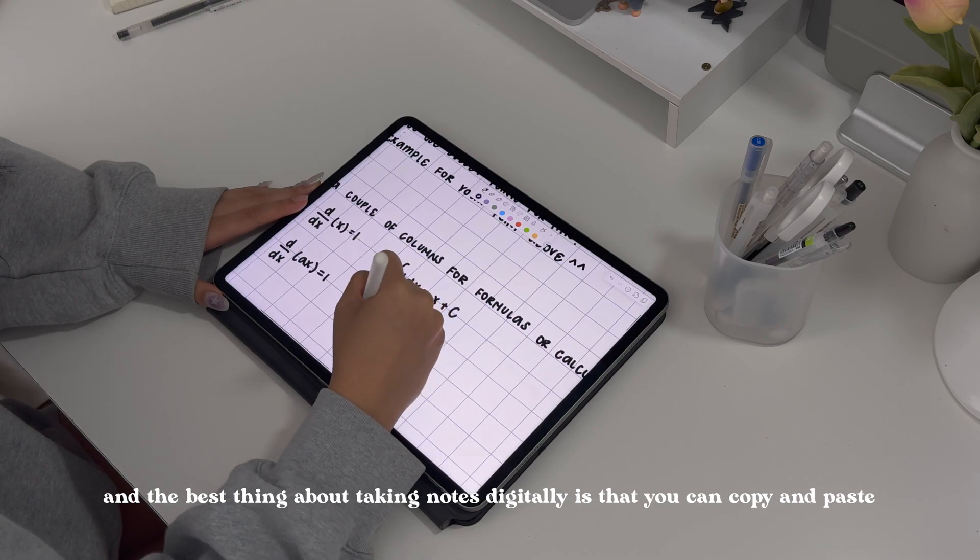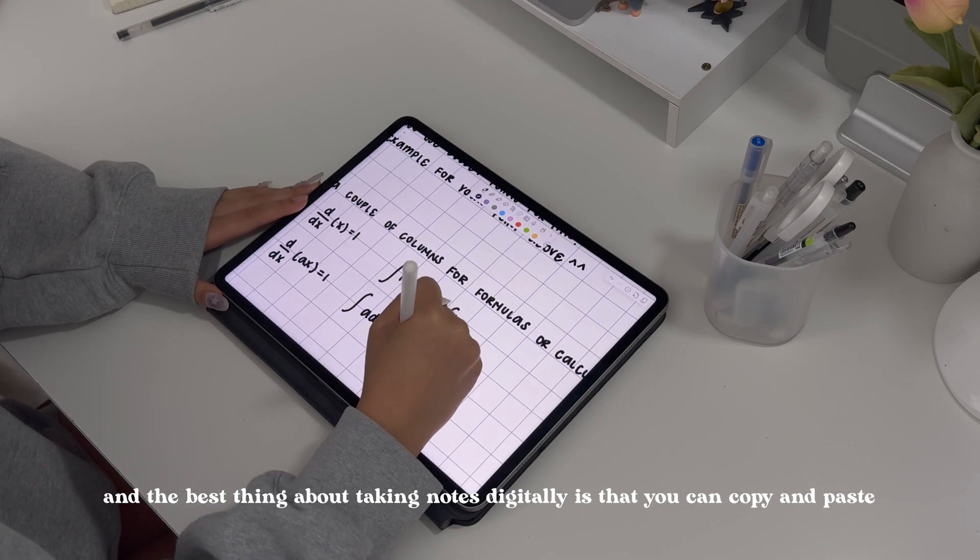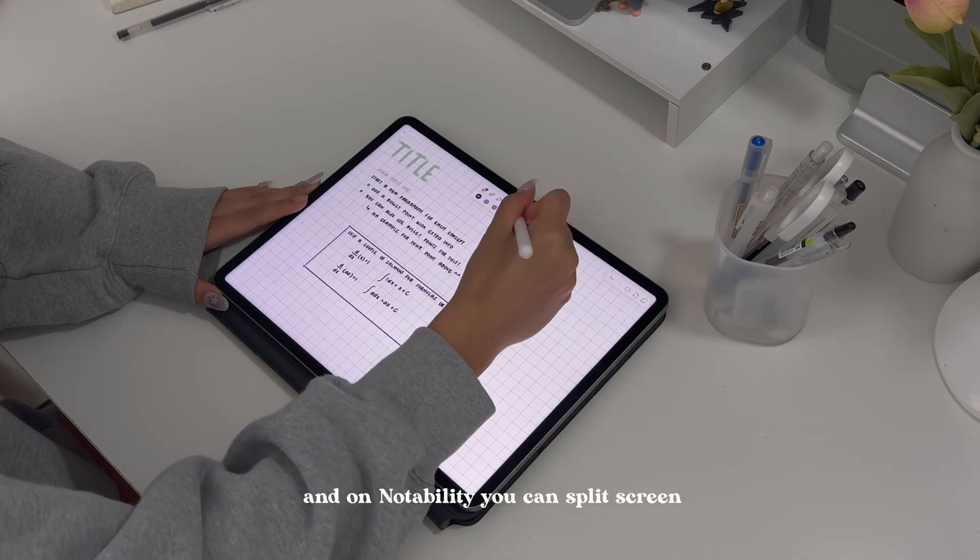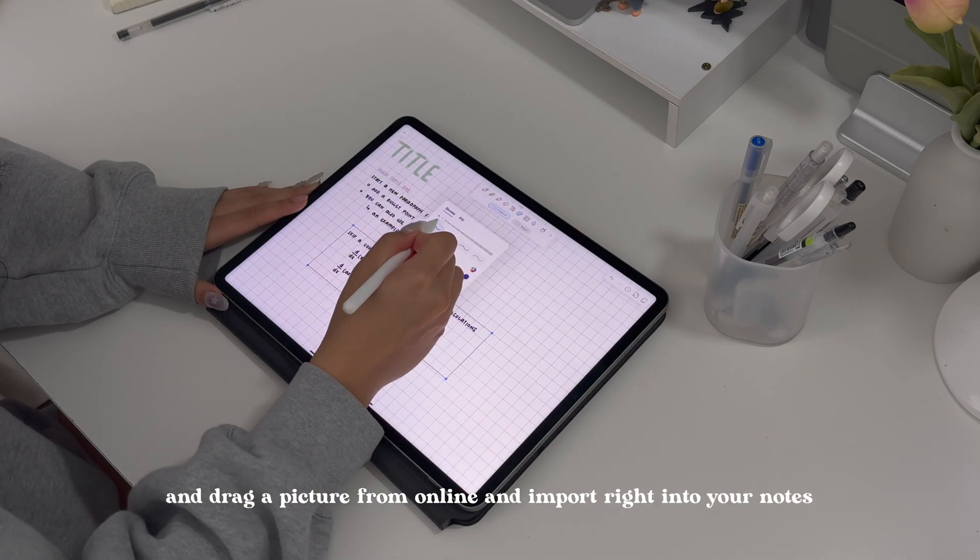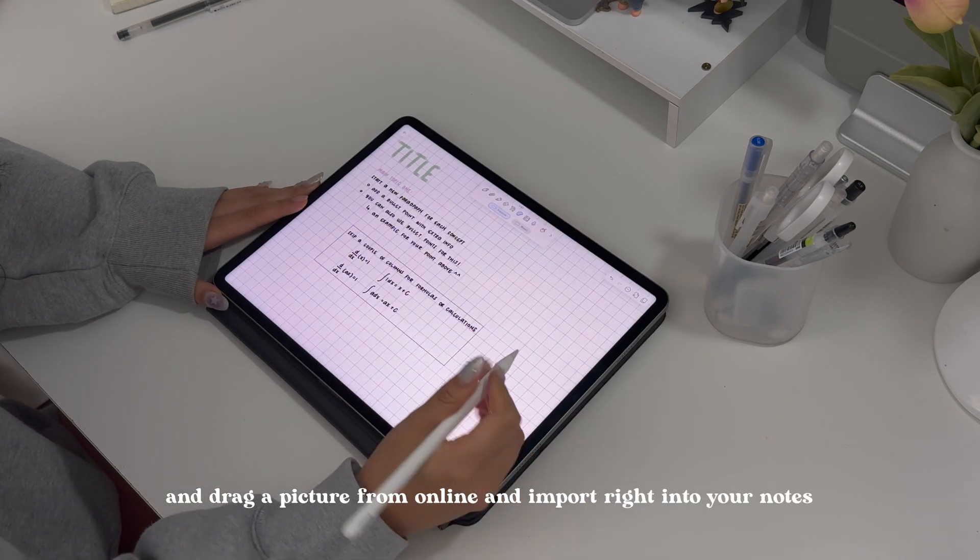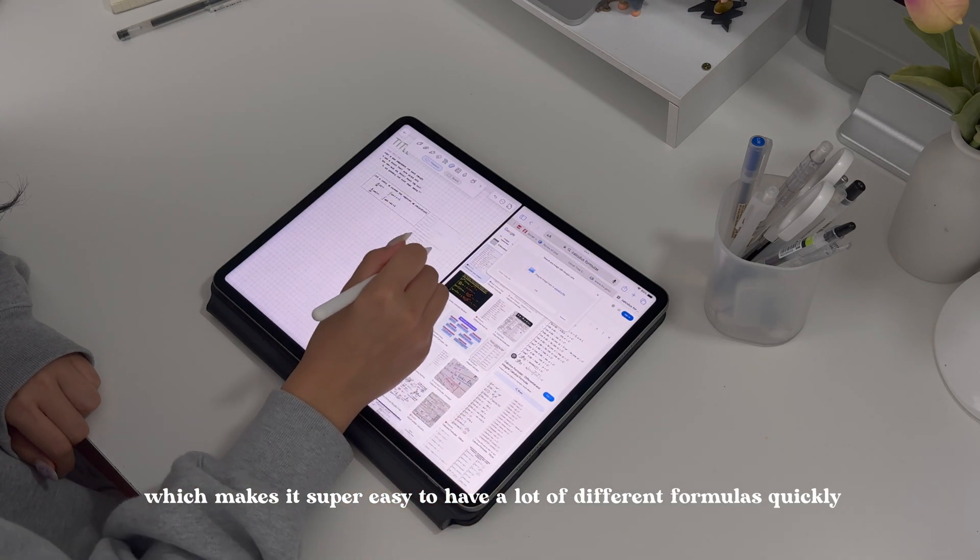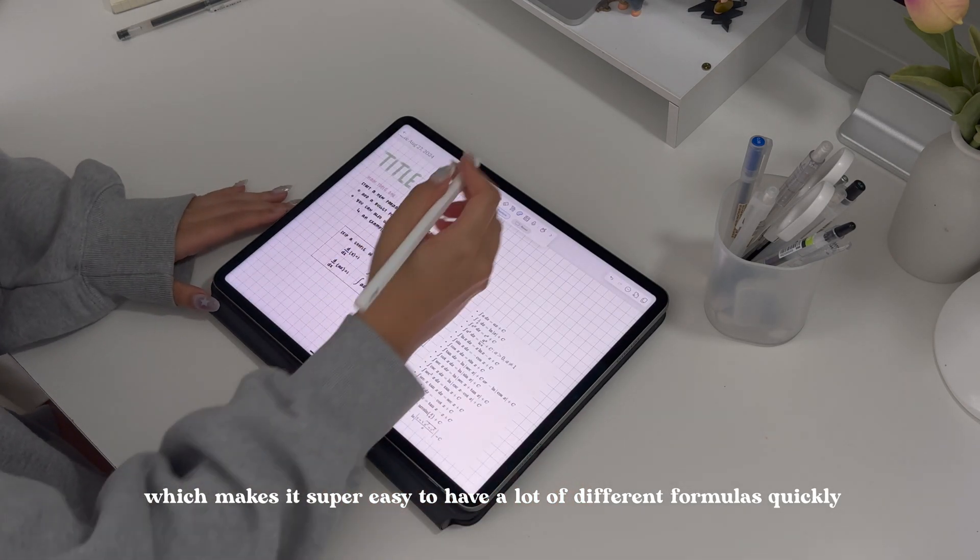The best thing about taking notes digitally is that you can copy and paste. On Notability you can split screen and drag a picture from online and import it right into your notes, which makes it super easy to have a lot of different formulas quickly.